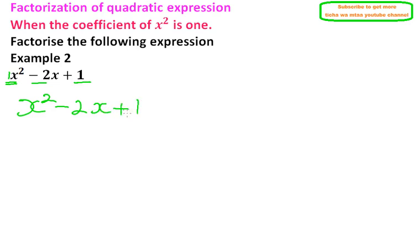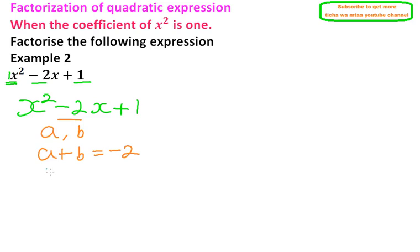To factorize is to introduce a bracket. We look for two numbers — let's say a and b — that satisfy the following two conditions: when you add them, a plus b should equal the coefficient of x, which is minus 2. And when you multiply them, a times b should equal the constant, which is 1. So we look for two numbers that satisfy both of these conditions.